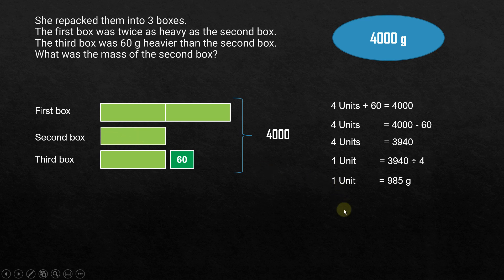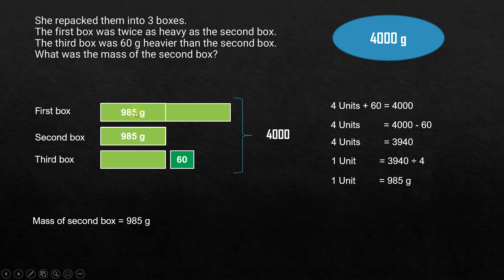Looking at the diagram, the second box is represented by one unit, so the mass of the second box is 985 grams. If you want the mass of the first box, it's two units: 985 plus 985, or 2 times 985 grams. For the third box, it's one unit plus 60 grams: 985 plus 60.